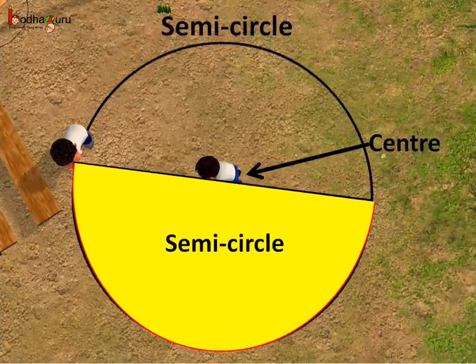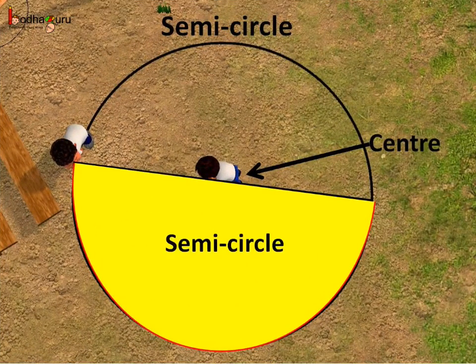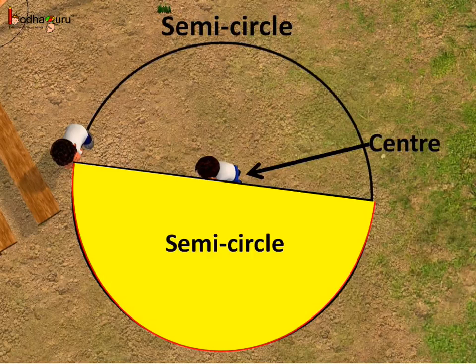The diameter is the longest chord of the circle which passes through the center. It divides the circle into two equal parts and each part is called a semi-circle. So there are two semi-circles in a circle.